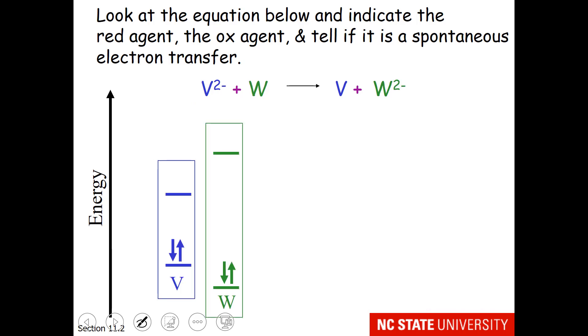Let's try another example. Same idea. We're going to find the reducing agent, the oxidizing agent, and tell if it is a spontaneous electron transfer. I already have W drawn, but I need to draw V2 minus. So I will add two electrons to V, and now I have V2 minus.